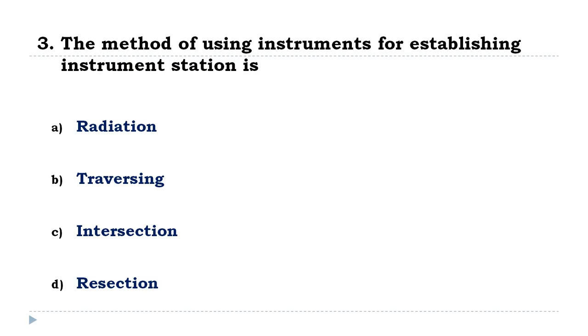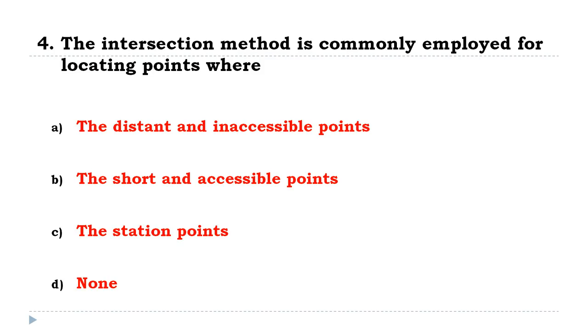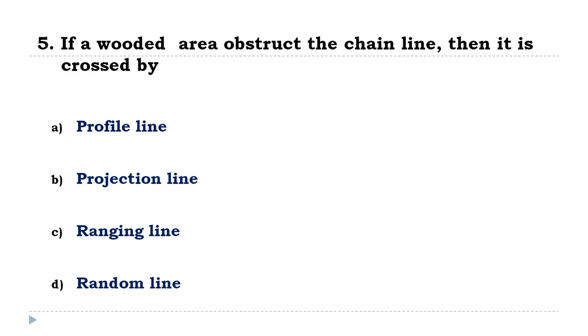The method of using instruments for establishing instrument station is called resection. The intersection method is commonly employed for locating distant and inaccessible points. If a wooded area obstructs the chain line, then it is crossed by a random line.